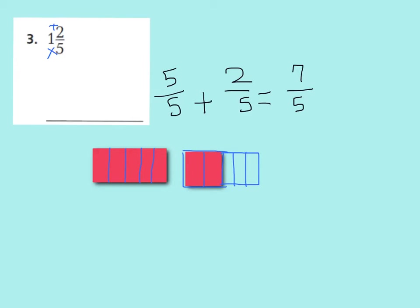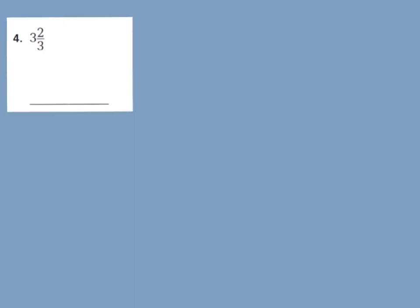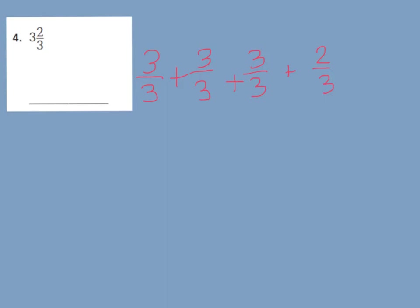Let's try number 4. My whole will be cut into thirds. Let's make 3 thirds — that's the first whole — plus 3 thirds, plus 3 thirds. That shows my 3 wholes. Now we add the 2 thirds. Adding up: 3 thirds plus 3 thirds is 6 thirds, plus 3 more is 9 thirds, plus 2 more is 11 thirds.